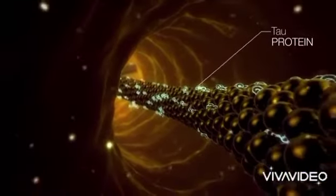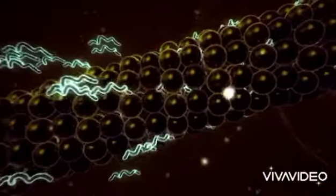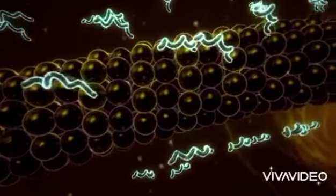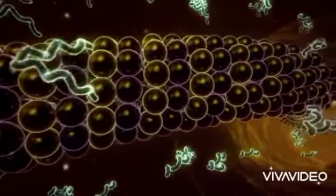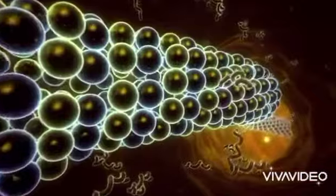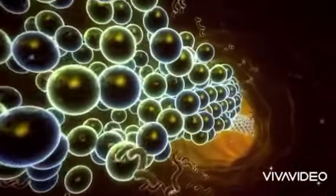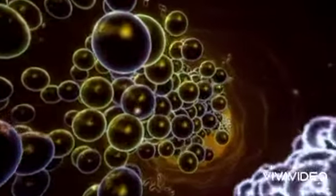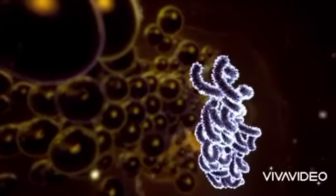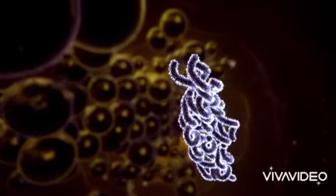In Alzheimer's disease, tau protein becomes defective and detaches from the microtubules. Thus, the skeleton of the neuron dissociates as it is no longer maintained. Defective tau proteins then assemble to form filaments in a neuron.